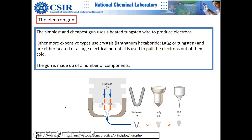These are the mainstay electron sources. Then you have what is called a Wehnelt cap.